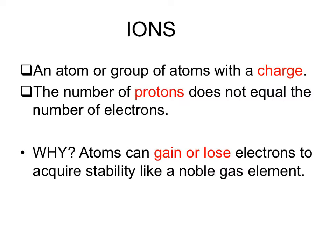Sometimes, atoms or groups of atoms can have a charge, and that's because the number of protons does not equal the number of electrons. This is called an ion. Why does this happen? Well, atoms gain or lose electrons to acquire stability, like noble gas elements.